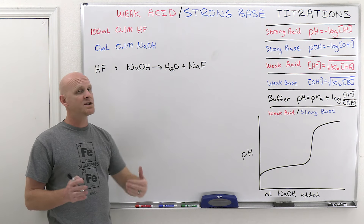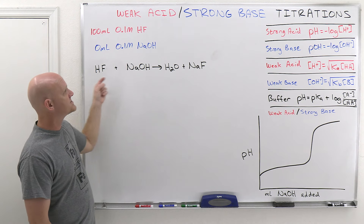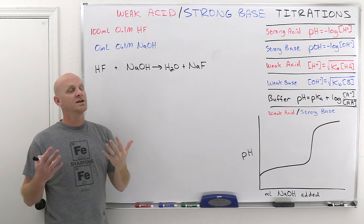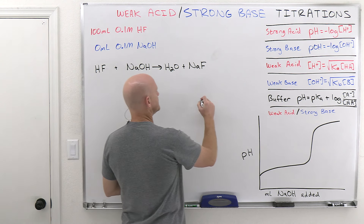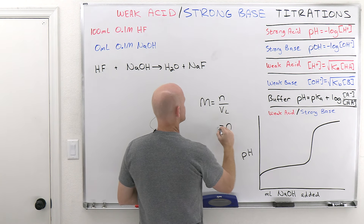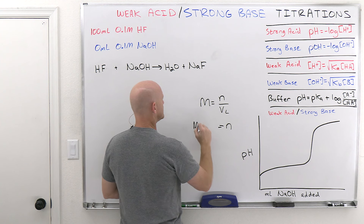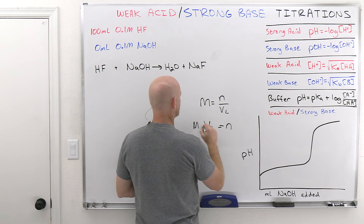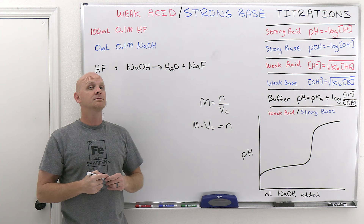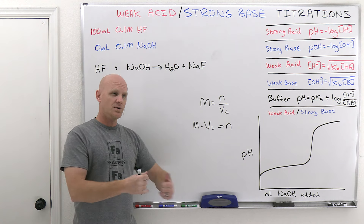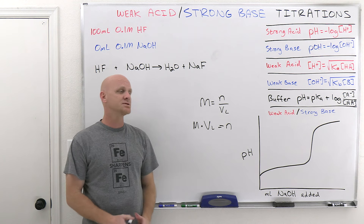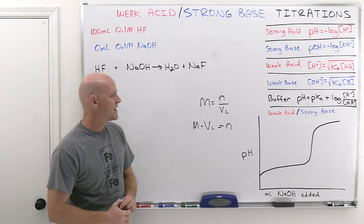We're going to take the same approach we did in the last lesson: run the reaction to completion. For reactions that go to completion, we need moles. If molarity equals moles over volume in liters, rearranged, moles equals molarity times volume in liters. I will be doing this all in moles throughout this lesson.